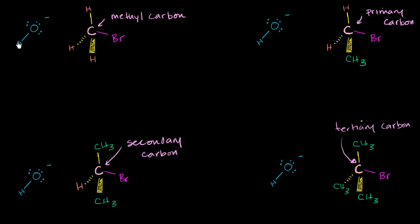So let's go first to this first scenario right over here. We have a hydroxide anion. We've already seen that a hydroxide anion is a decent nucleophile. And bromine is a decent leaving group.